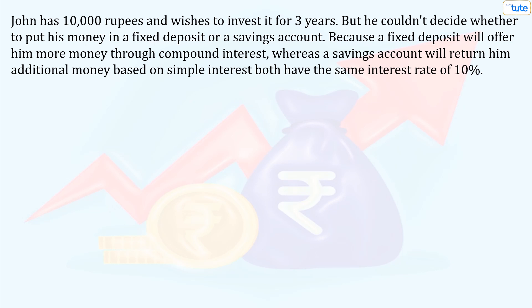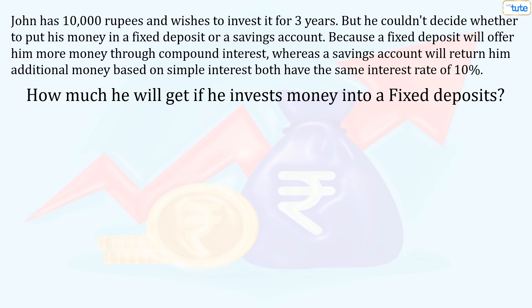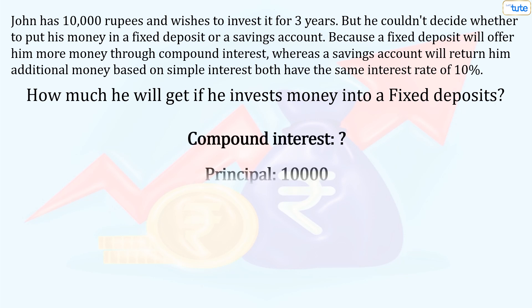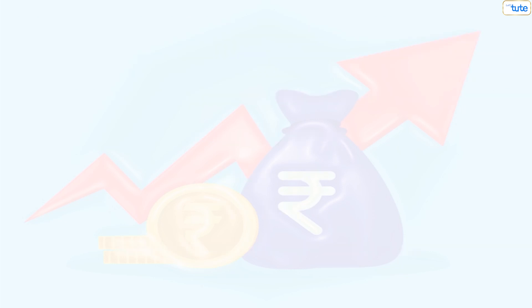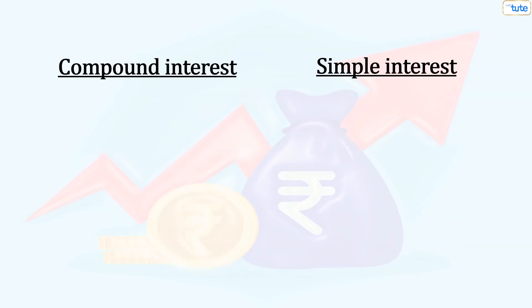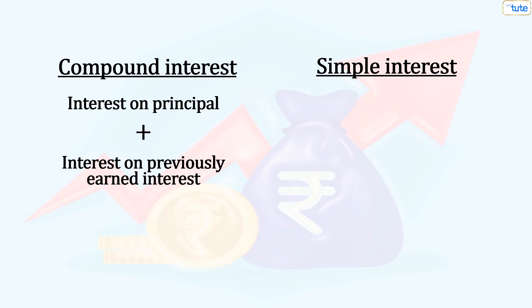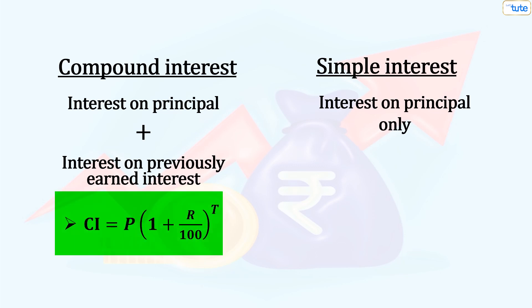Now let's see how we can calculate the additional amount that John will receive if he invests his money in a fixed deposit. We need to calculate the compound interest on 10,000 rupees over 3 years at a rate of 10% compounded annually. In compound interest, we have interest on the principal amount as well as on the previously earned interest. But in simple interest, we earn additional money only on the principal amount.